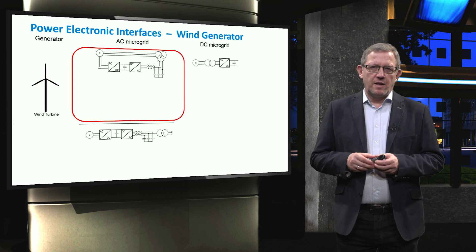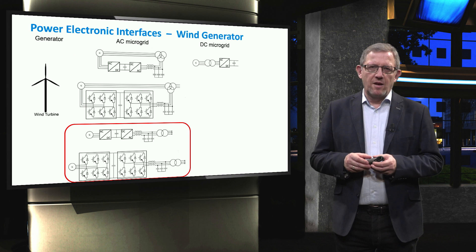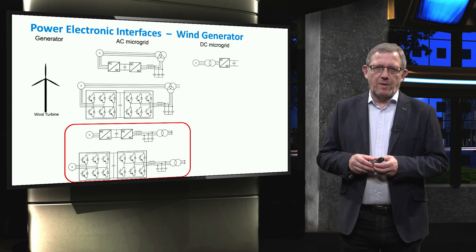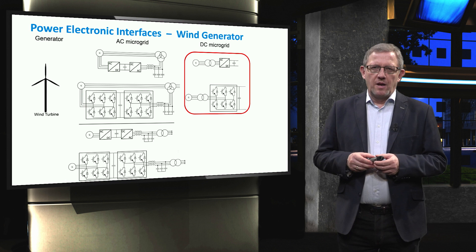In this slide, we show the details of power electronic interfaces including the two back-to-back power converters for a doubly-fed induction generator and a full-scale permanent magnet synchronous generator. Typically one converter is responsible for regulating the DC link voltage and reactive power, while the other controls the active power and the grid voltage. To connect the wind generator to a DC microgrid in the simplest form, a three-phase AC to DC rectifier can also be used.